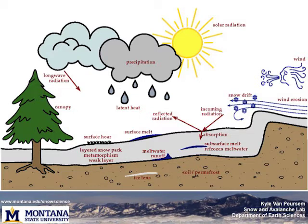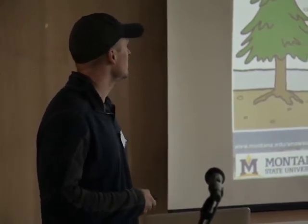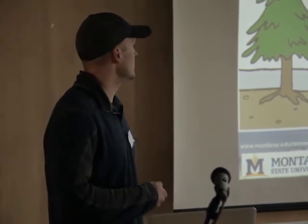Here's an illustration of all the different processes that go into driving a snowpack simulation: solar radiation, wind drifting, erosion, incoming and outgoing radiation, latent heat from precipitation, longwave radiation. You can predict surface hoar, melt water runoff, and you can even add a canopy layer that tells how much area is covered by canopy, which impacts longwave radiation. SNOWPACK takes all of that into account to give you a simulation.